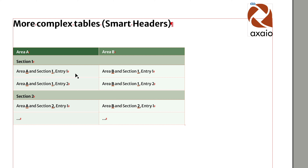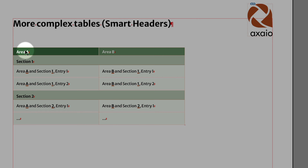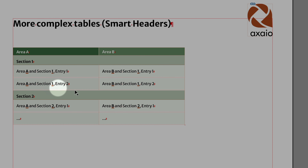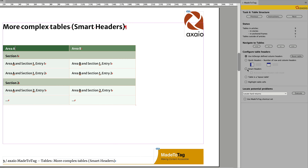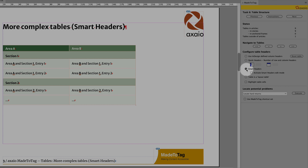There are two approaches: top-down or bottom-up. Starting with the top-down approach, you go inside your table and first determine what needs to be defined as a header for which data cell. Area A and Area B define all entries in the normal cells, and Section 1 and Section 2 define special cells below them. Go inside your table, place a cursor inside, and activate the smart headers.